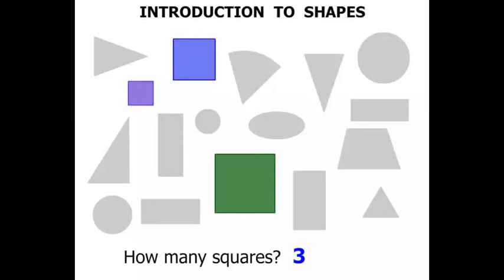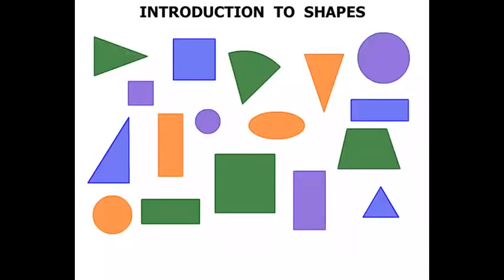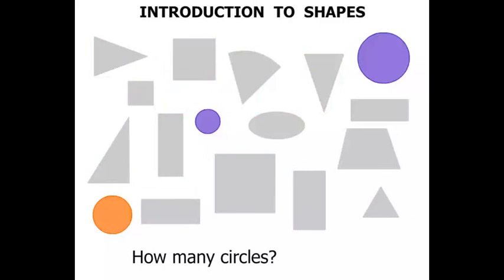Terrific. Next question, how many circles? We'll have a good look. Again, let's fade out the rest. So what have we got? One, two, three. We've got three circles as well.